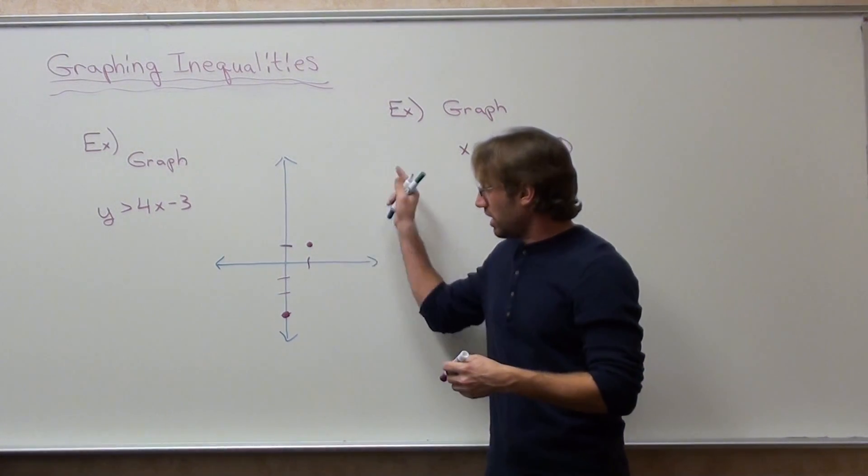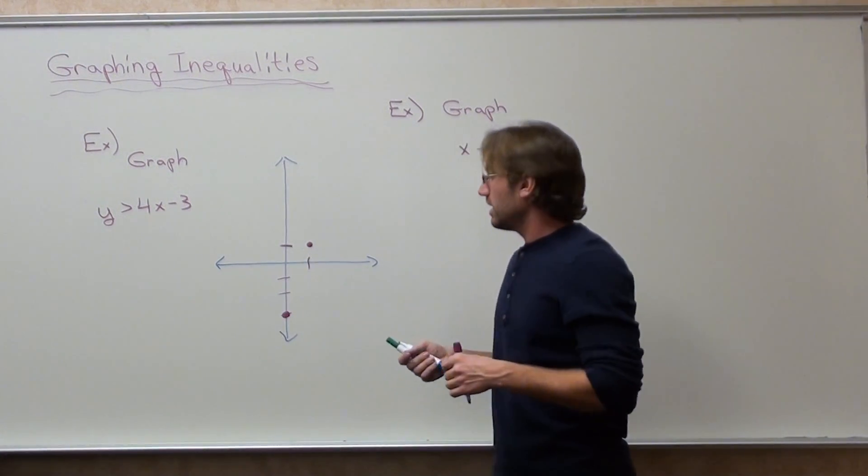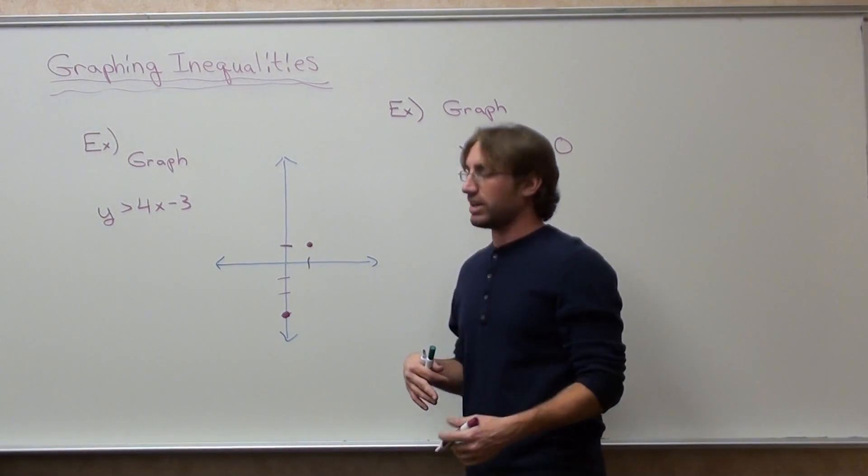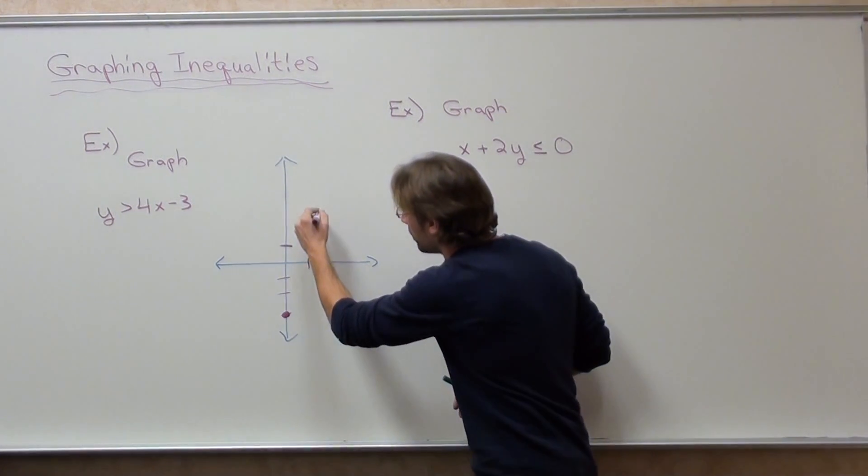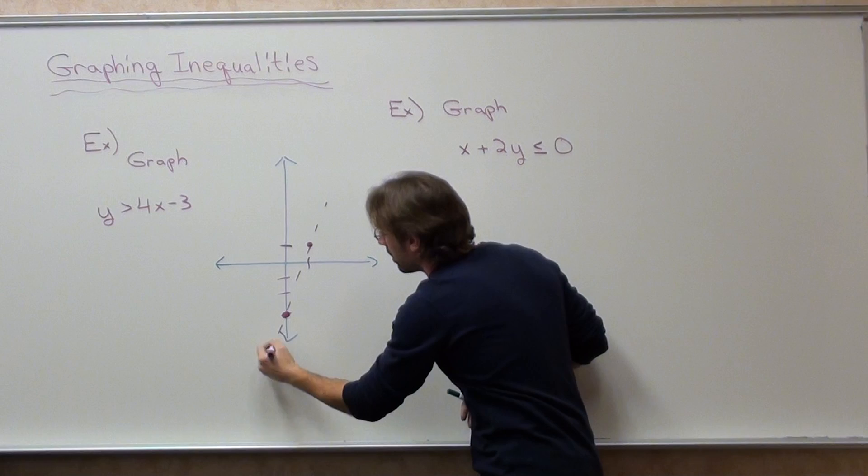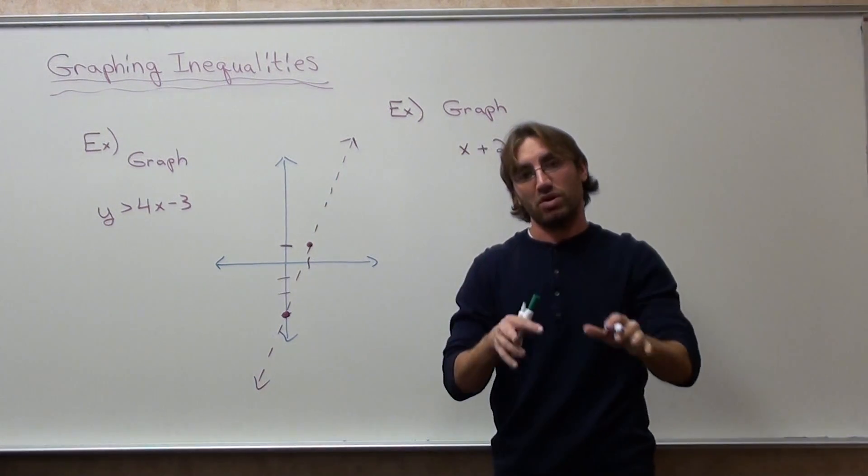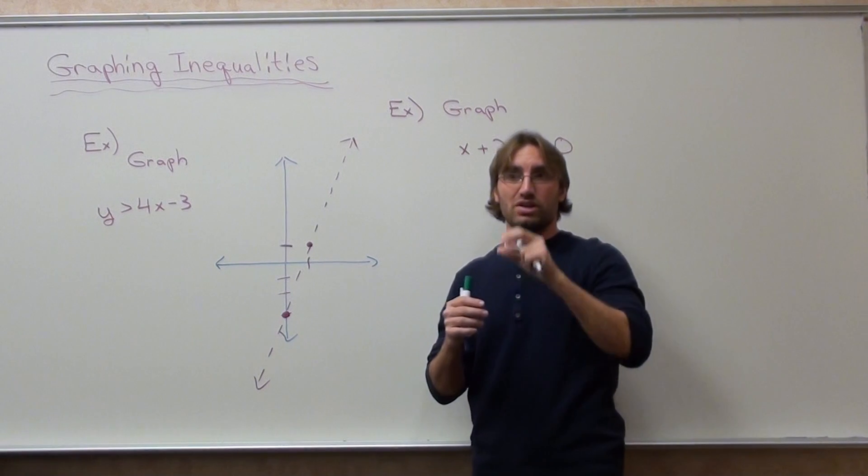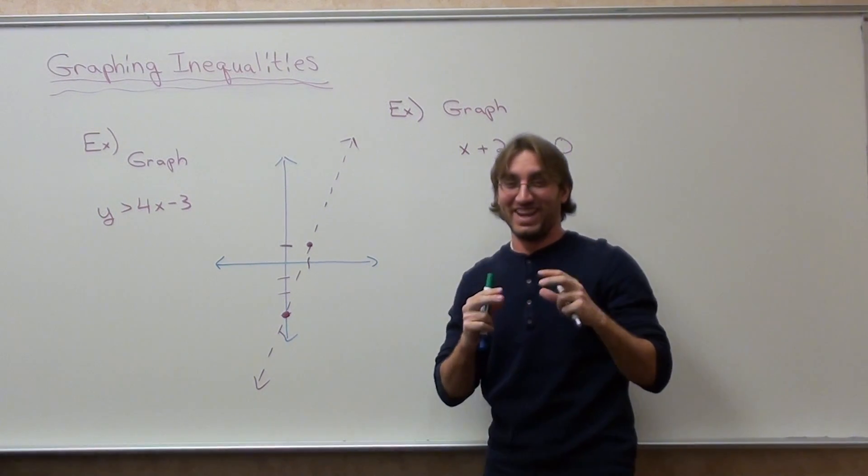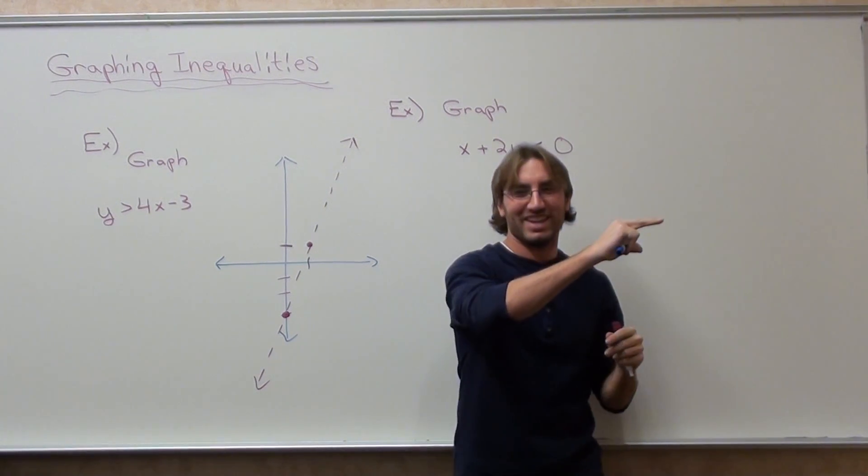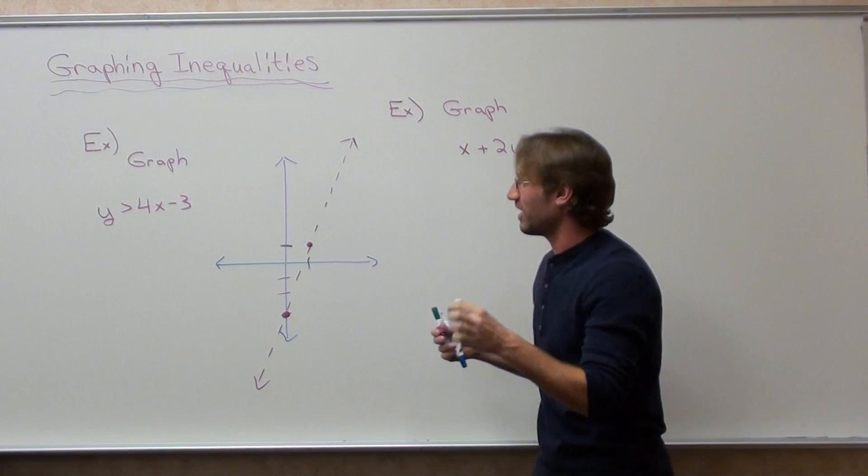I'm going to plot this and use a straight edge to make sure it's relatively decent. I connect that with a broken line. When it's greater than or less than, it's a broken line. When it's greater than or equal to or less than or equal to, it's a solid line.